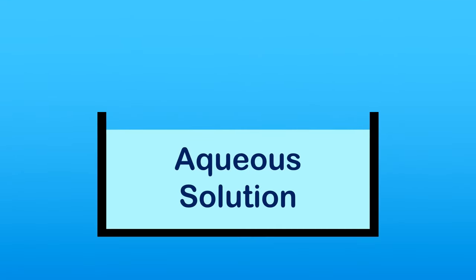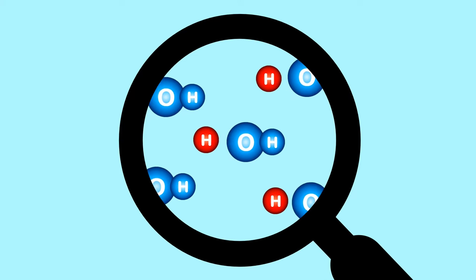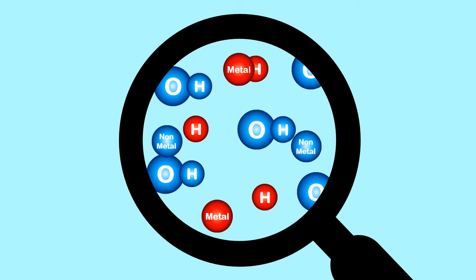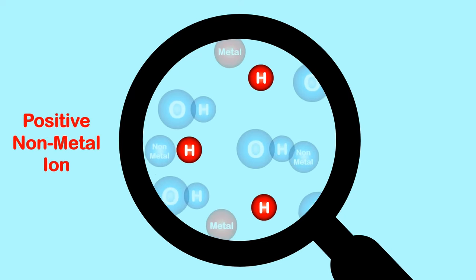But when the ionic compound is dissolved in water, when it's aqueous, we also have to consider that the water itself splits into a positive hydrogen ion and a negative hydroxide ion, in addition to the metal and non-metal ion from the ionic compound, hydrogen being one of the only positive non-metal ions.